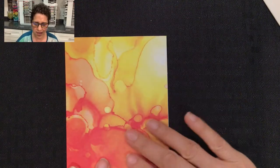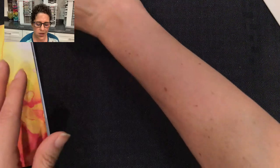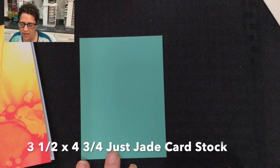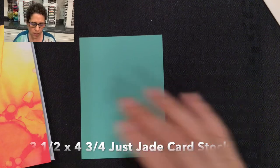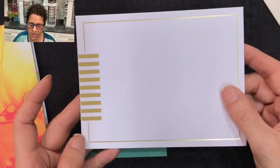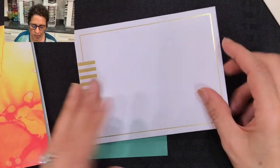For the next card we're going to be using this as the base of the card. I'm going to be using a piece of Just Jade cardstock that's been cut at 3.5 by 4.75 inches. We're also going to be using one of these beautiful envelopes that come in the Paper Pumpkin kit.